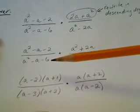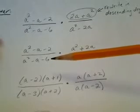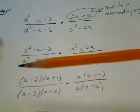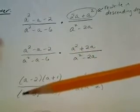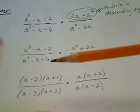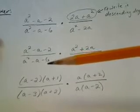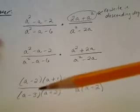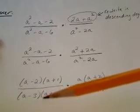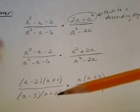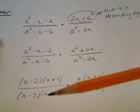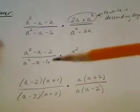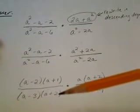For the denominator of the first term, a squared minus a minus 6, I can't find a greatest common factor so I use reverse FOIL. I set up two parentheses with a and a for the first terms. Then I look at factors of negative 6 that add to negative 1: negative 3 and positive 2 work. Checking: a squared, outside is 2a, inside is negative 3a giving negative a, and last terms give negative 6. So a squared minus a minus 6 factors to (a minus 3)(a plus 2).